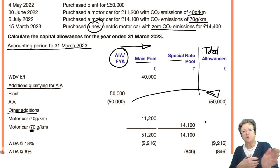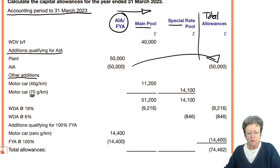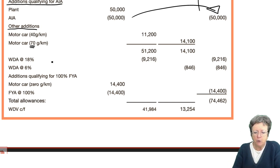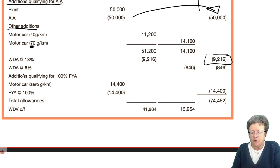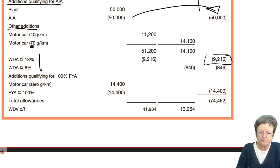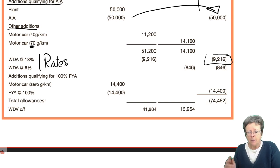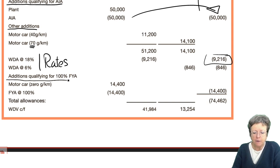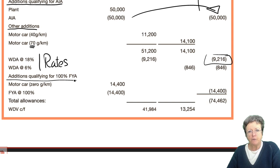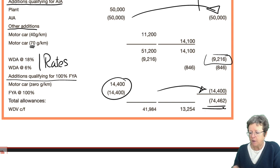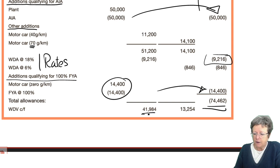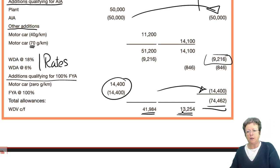The car with 40 grams emissions goes into the main pool; the high-emissions car goes into the special rate pool. Add them all in, underline them, and subtotal them so you know what you're dealing with. The main pool WDA is 18% of £51,000 = £9,180, straight into the total column. The special rate pool WDA is only 6% — check it, use the rates. The new electric car gets 100% first-year allowance, never pro-rated. Add all the allowances together — that total goes to your adjusted trade profits, and you have two figures to carry forward. Always finish off your pro-formas with a double underline, nice and neat.